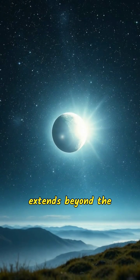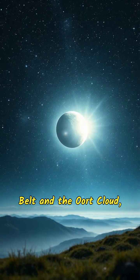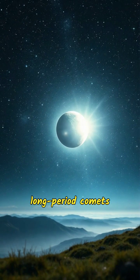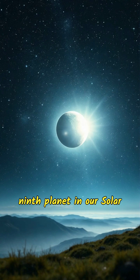The solar system extends beyond the planets to the Kuiper belt and the Oort cloud, where icy bodies and long-period comets originate. Pluto, a dwarf planet, resides in the Kuiper belt and once held the title of the ninth planet in our solar system.